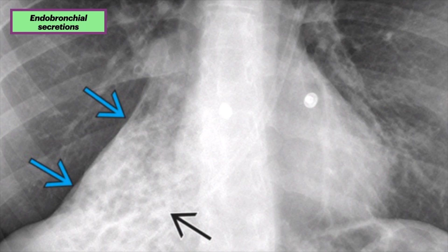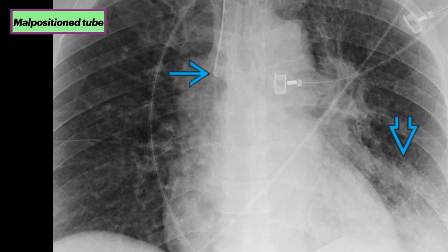This is endobronchial secretions, a common etiology of atelectasis in hospitalized patients. There is sudden onset of lobar or total lung collapse, typically seen on x-ray alone. It is usually relieved with respiratory therapy.